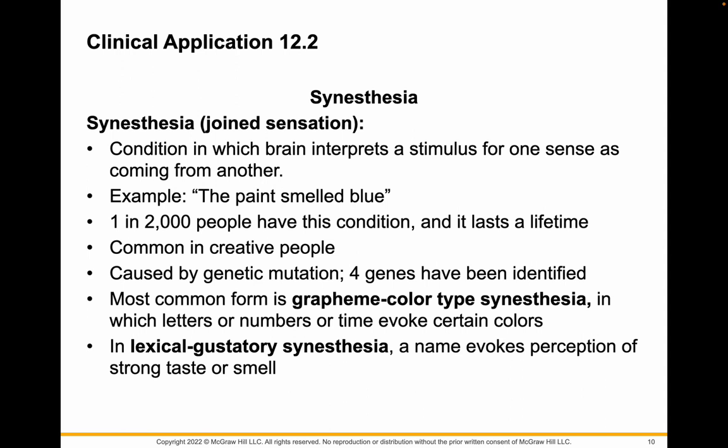Synesthesia is where the brain interprets the stimulus for a sense that's coming from another. For example, a paint smelled blue. A specific synesthesia I encountered is where numbers and words had color. It's due to a mutation in some genes. The most common form is where letters or numbers evoke certain colors. In lexical gustatory synesthesia, a name gives a taste or smell.